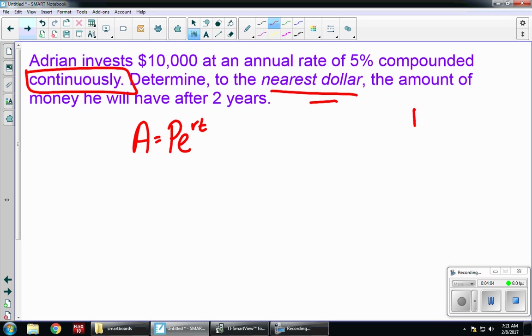So P is my initial, so I'm starting with 10,000. E, remember, is a number in your calculator. R is the rate, so I have 5%, which when I convert to a decimal is .05. And T is the time in years, and they told us two years.